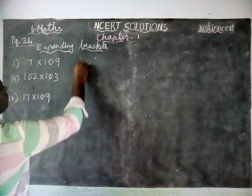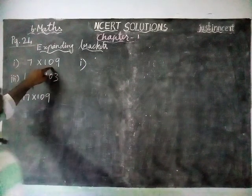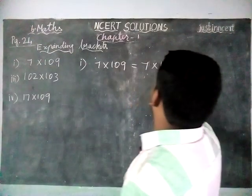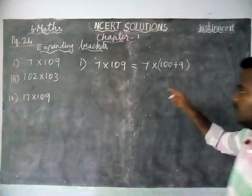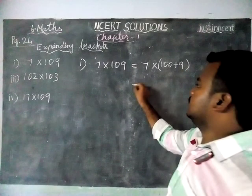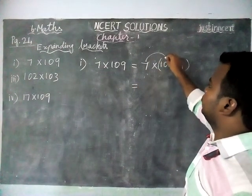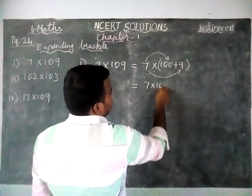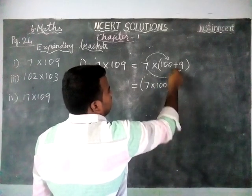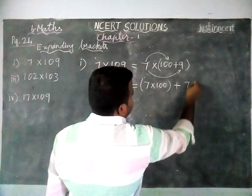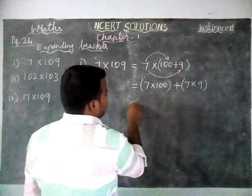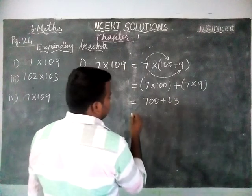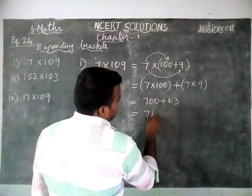First question: 7 × 109. We can separate this by using 7 × (100 + 9). We have separated 109 into 100 plus 9, and we multiply 7 with 100 and then 7 with 9. So 7 × 100 plus 7 × 9 equals 700 + 63. When we add these two, we get 763.